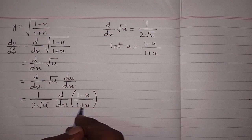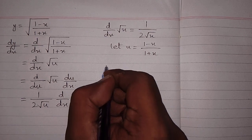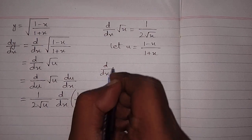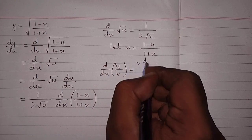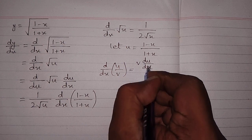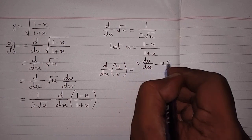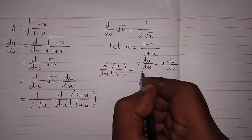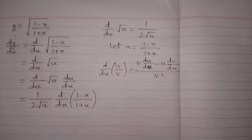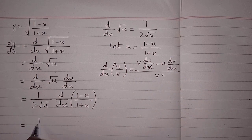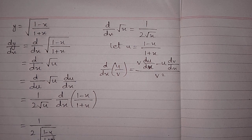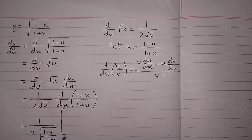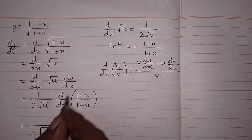Now we apply the quotient rule of differentiation: d/dx of (u/v) = (v · u' − u · v') / v². Here we put the value of u = (1 - x)/(1 + x) and apply the quotient rule.